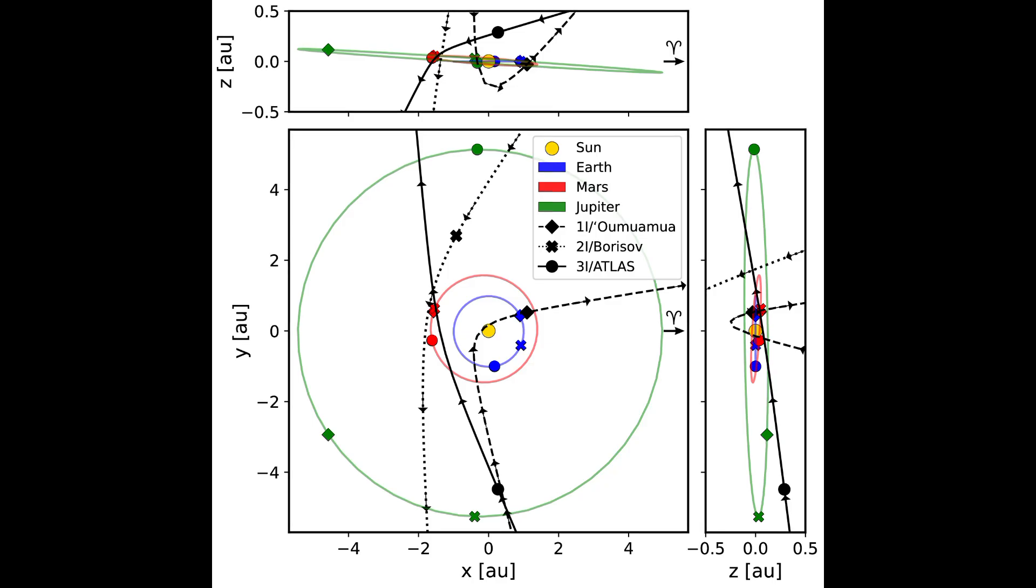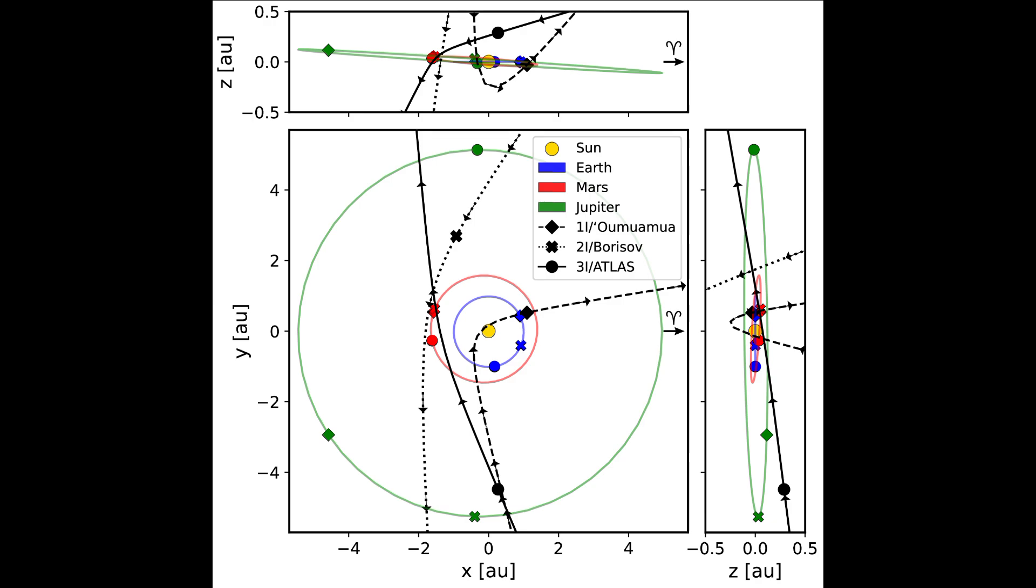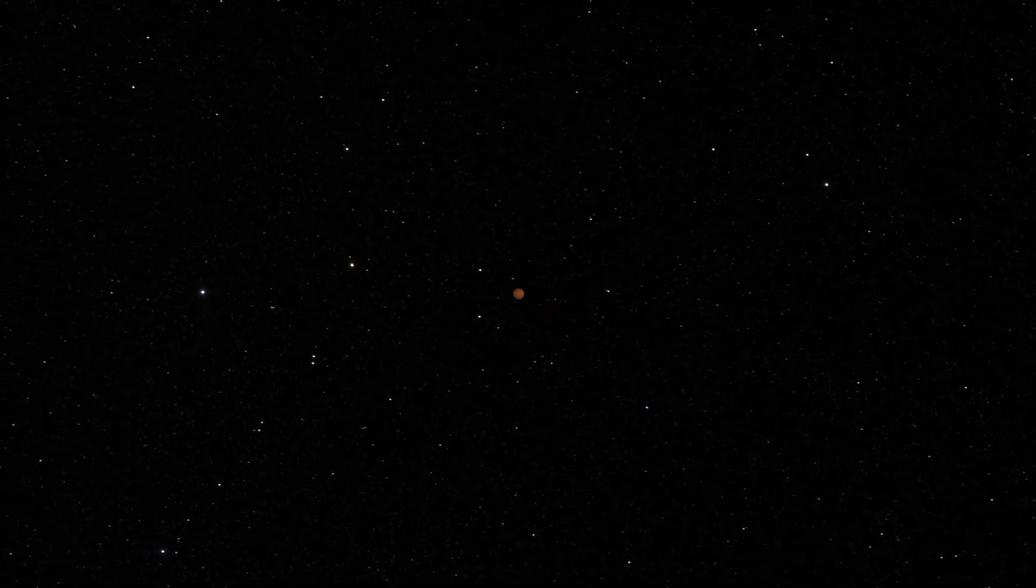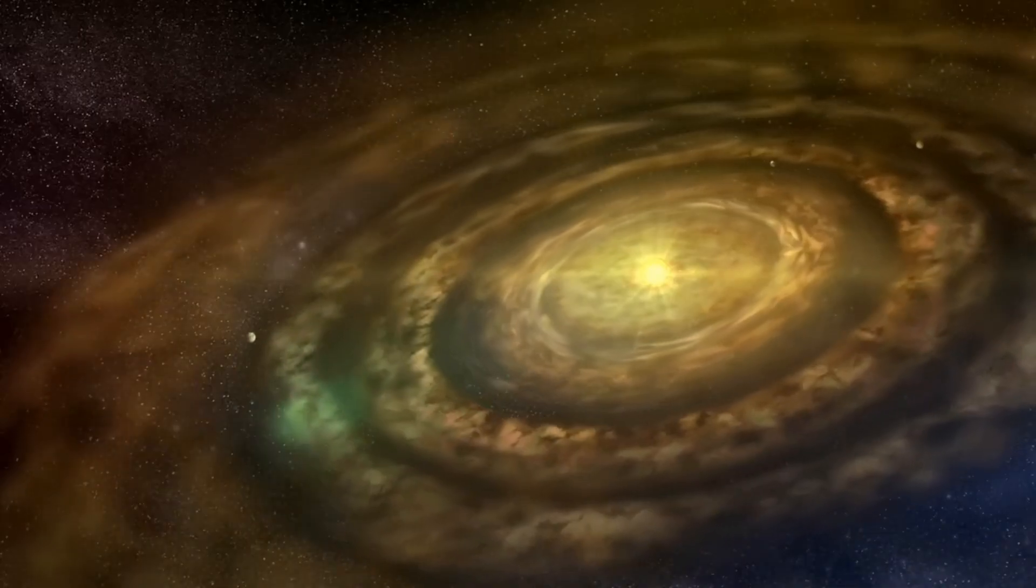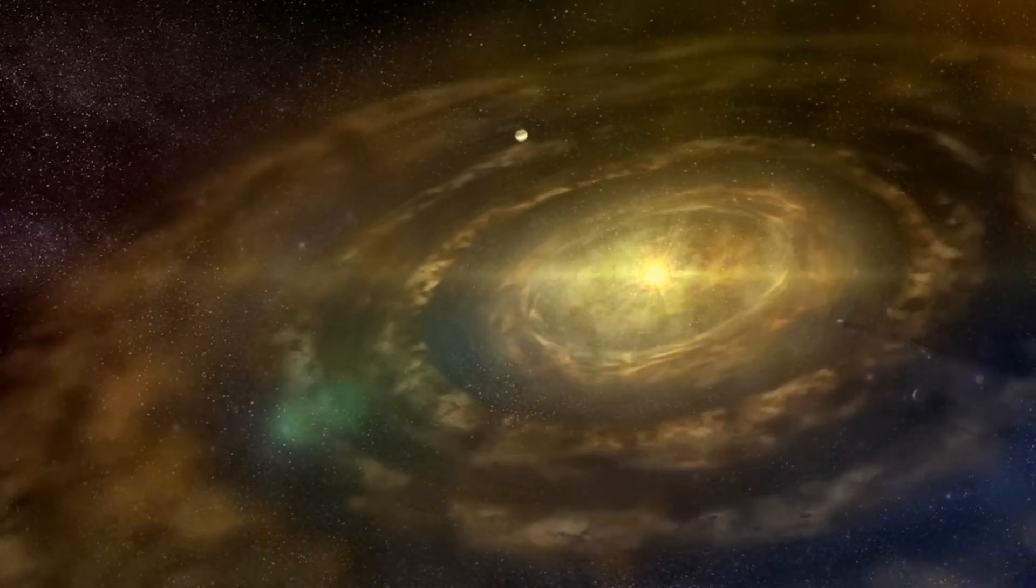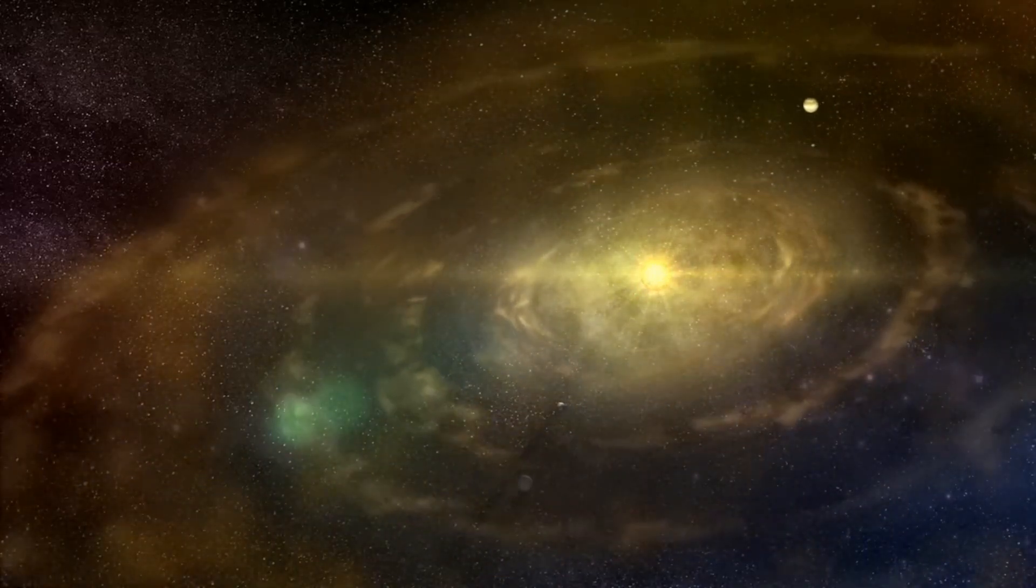Its retrograde, steeply inclined orbit, about 175 degrees, suggests it was violently ejected from its home system, possibly millions of years ago. These observations may reveal how planets form around other stars, and could even hint at prebiotic chemistry from far beyond our reach.